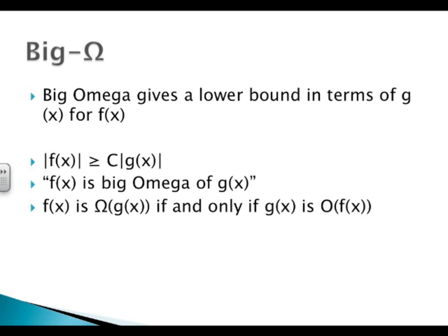Let's move on to Big Omega. Big Omega is the opposite of Big O — it gives a lower bound in terms of g of x for the function f of x. The absolute value of f of x is greater than or equal to a constant c times the absolute value of g of x. f of x is Big Omega of g of x if and only if g of x is Big O of f of x. This is intuitive because if one is the upper bound of the other, the other is going to be the lower bound of that one.